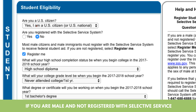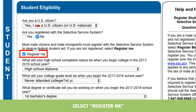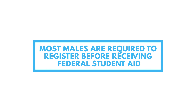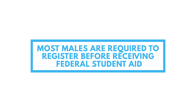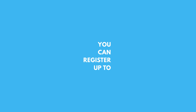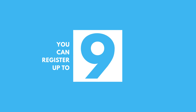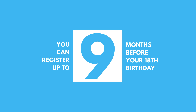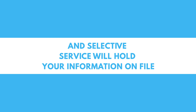If you are a male and not registered with Selective Service, select Register Me. Most males are required to register before receiving federal student aid. You can register up to 9 months before your 18th birthday, and Selective Service will hold your information on file.